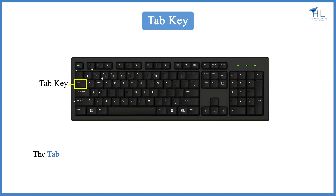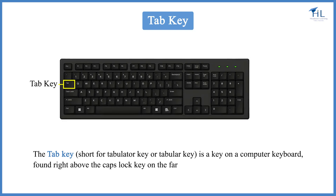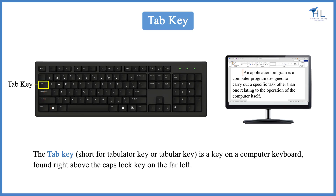The tab key, short for tabulator key or tabular key, is a key on a computer keyboard found right above the caps lock key on the far left. When you tap on the tab key while you are typing, it moves the cursor to the right a few spaces. Using the tab key is helpful when you are typing paragraphs and you need to indent the first line of the text.